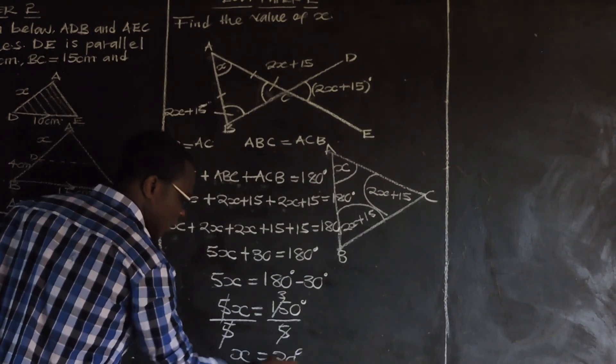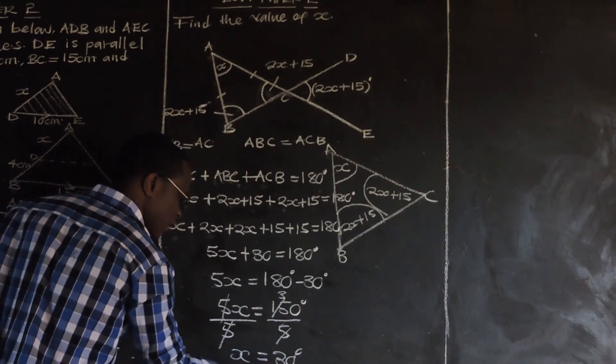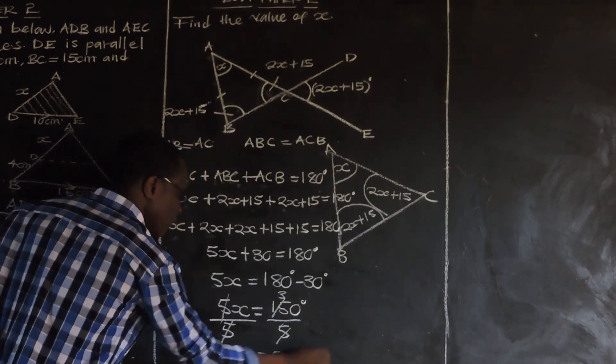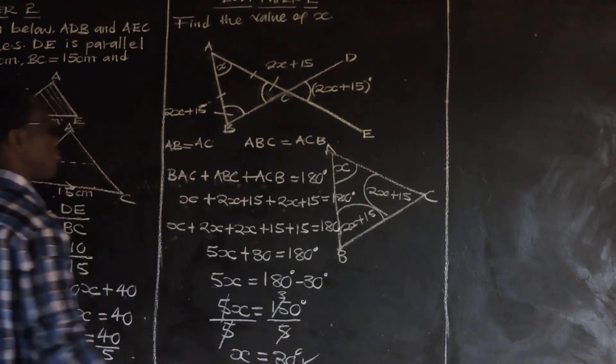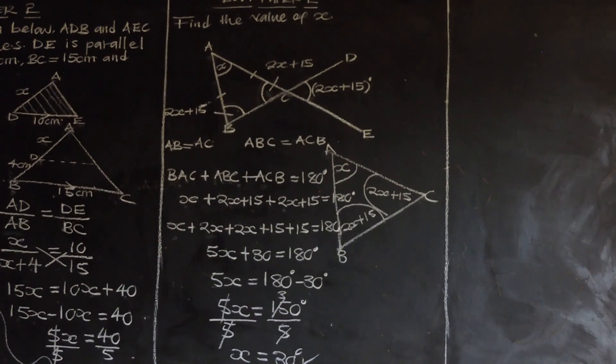Dividing both sides by 5, X equals 150 divided by 5, which is 30 degrees. So 30 degrees is the value of X.